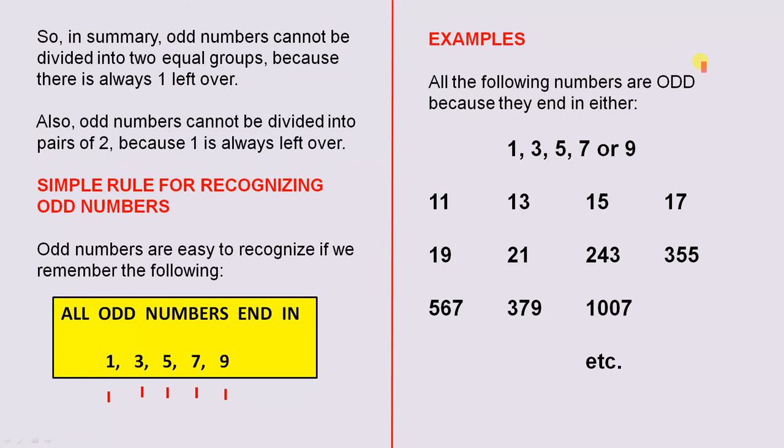Let's look at these examples. All the following numbers are odd because they end in either one, three, five, seven, or nine. Let's look at them quickly: eleven, thirteen, fifteen, seventeen, nineteen, twenty-one, two hundred forty-three, three hundred fifty-five, five hundred sixty-seven, three hundred seventy-nine, one thousand seven, et cetera. You could go on forever. However, they're all odd numbers because they end in one of those digits. What a great rule that is for recognizing odd numbers.